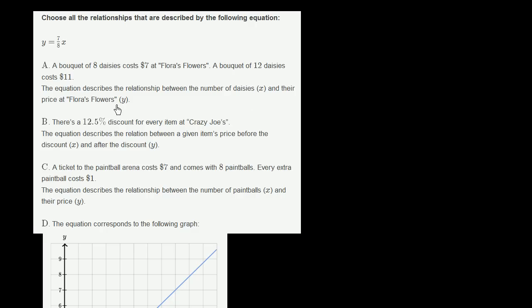Relationship A: A bouquet of eight daisies costs $7 at Flora's Flowers. A bouquet of 12 daisies costs $11. The equation describes the relationship between the number of daisies x and their price at Flora's Flowers y. So our x is the number of daisies, and our y is the price. When we get eight daisies, it costs $7. When we get 12 daisies, it costs $11.